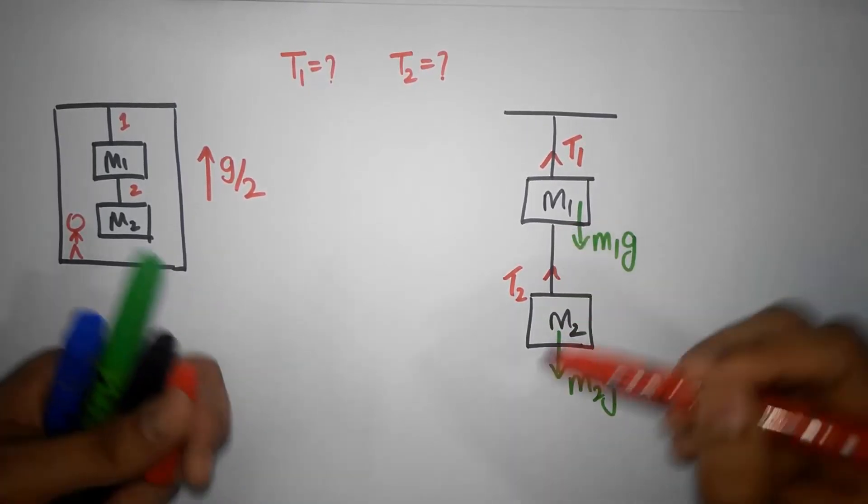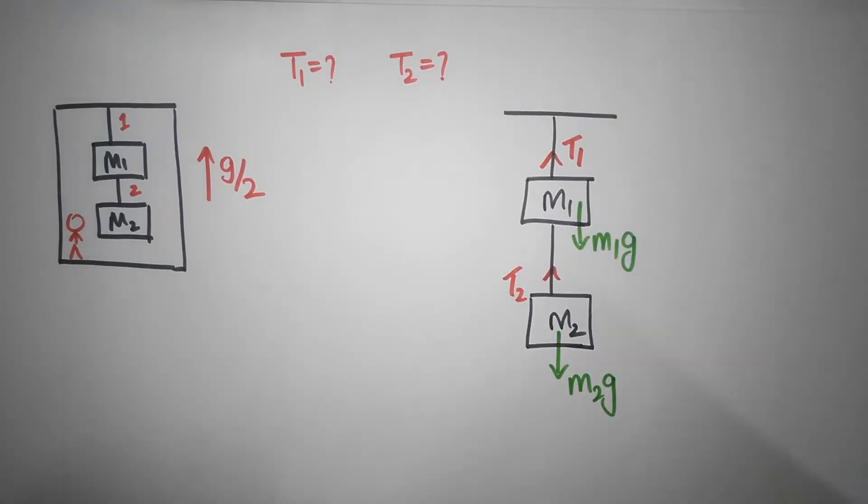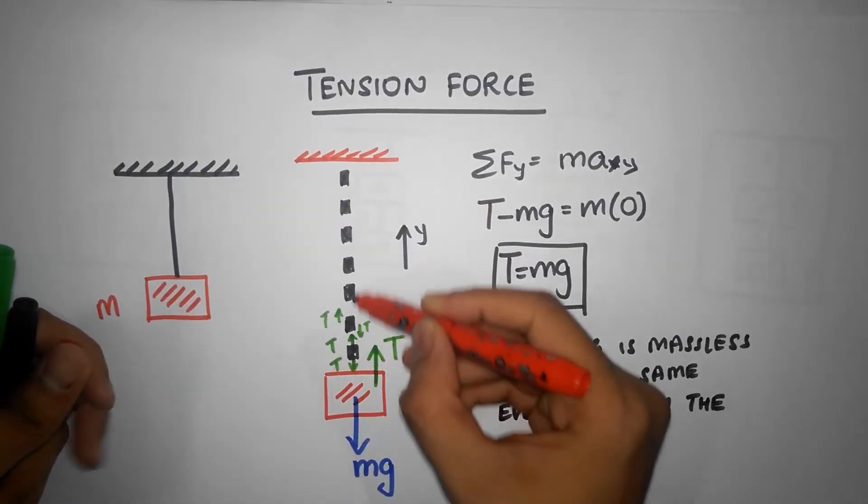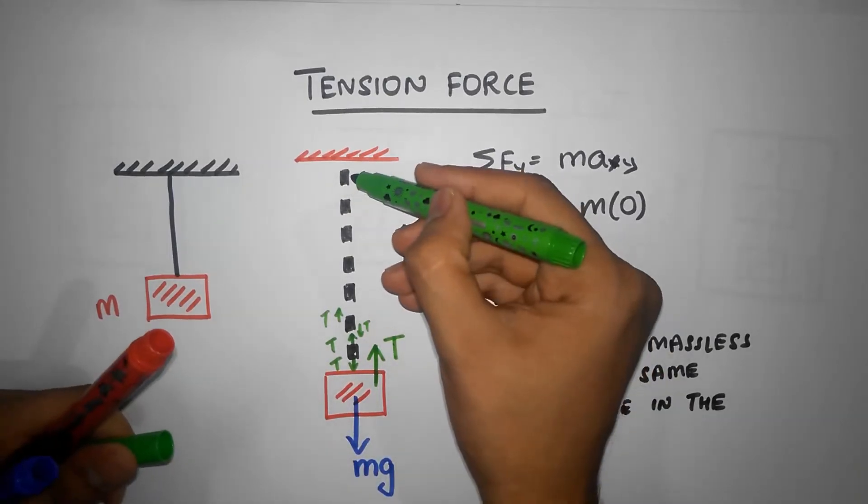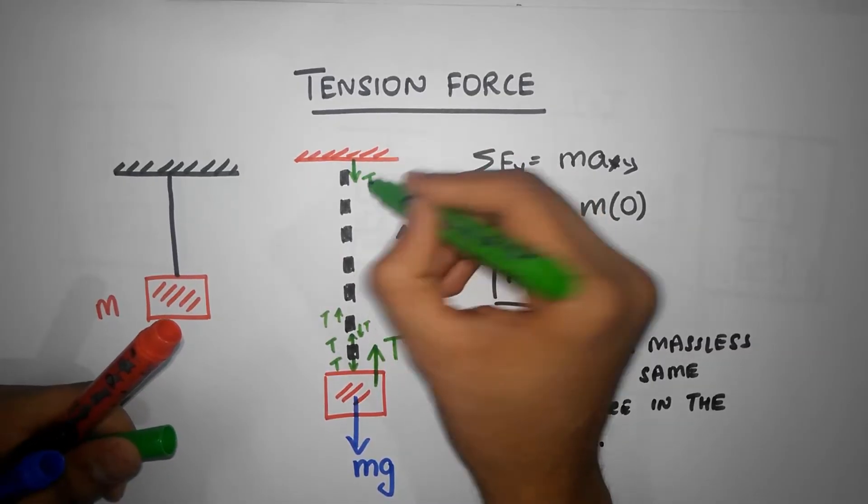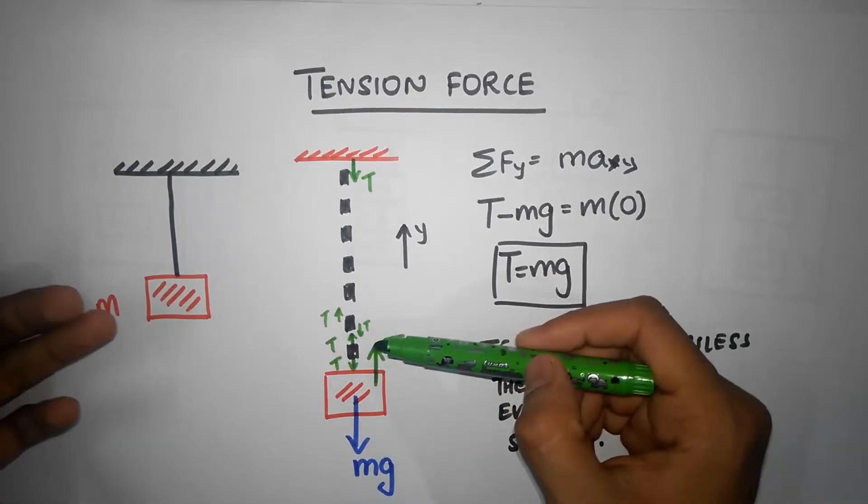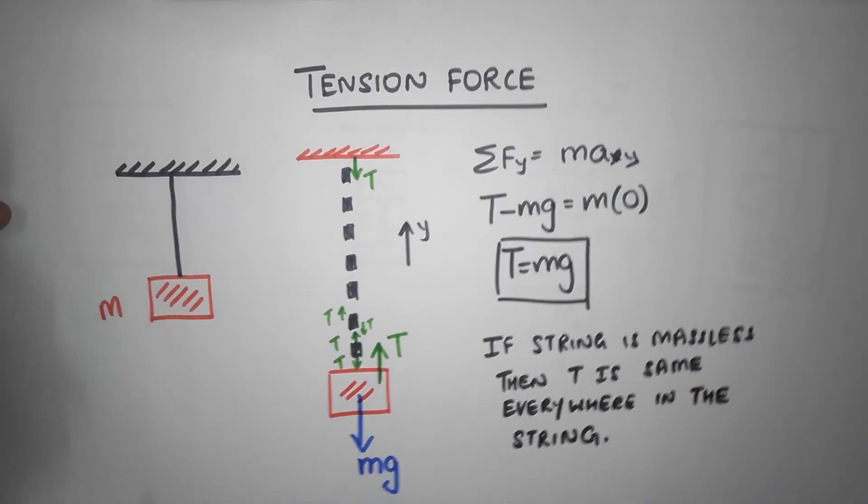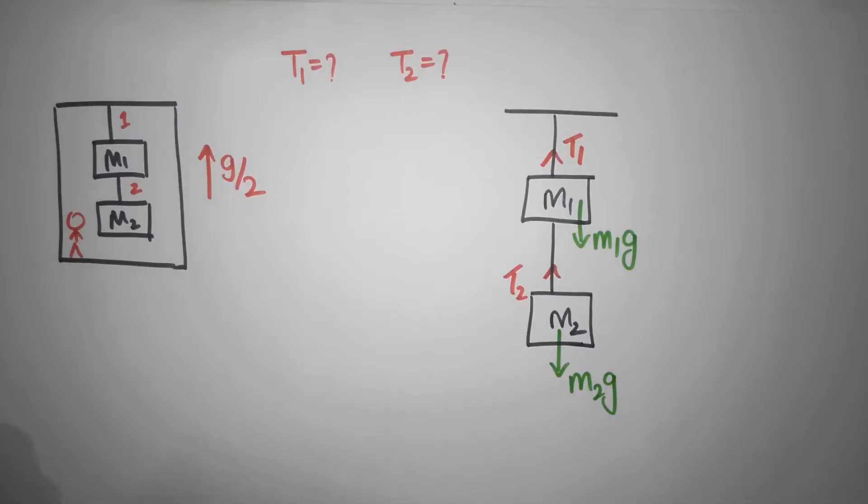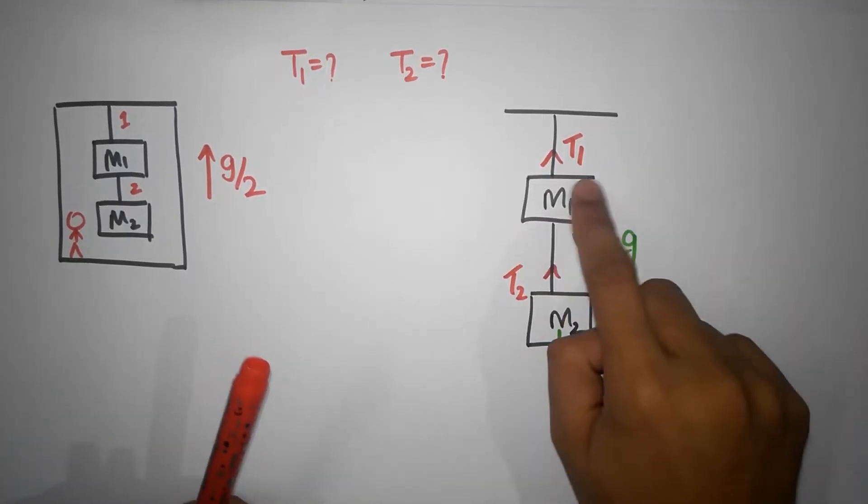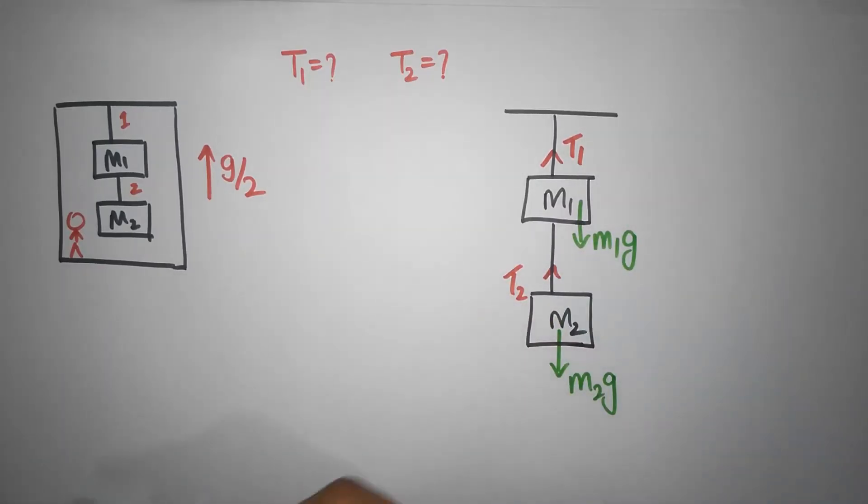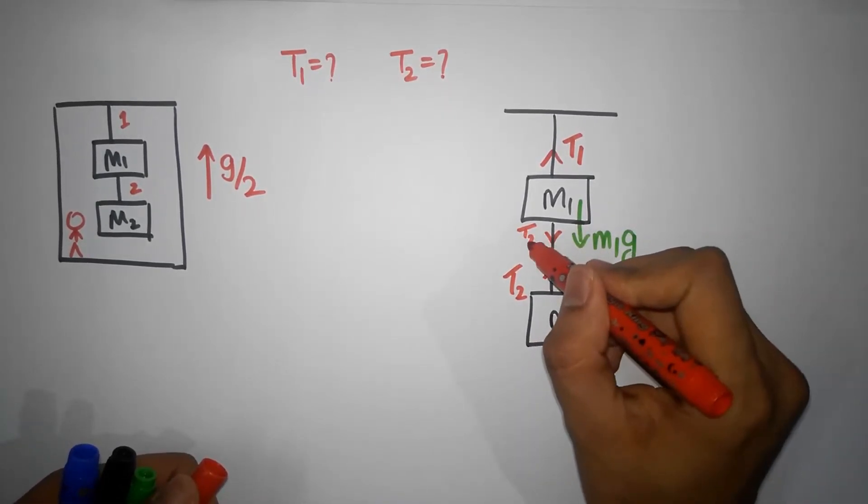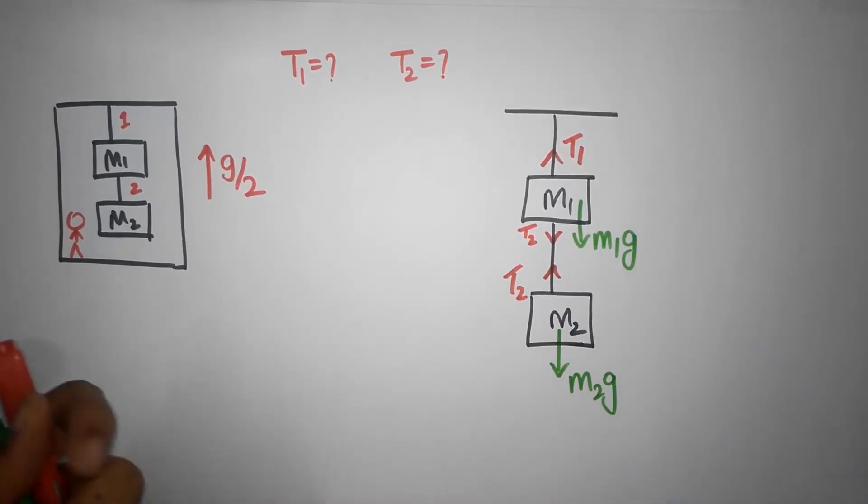But notice the tension force everywhere in the string is exactly the same. Remember what we did last time. And if this was the ceiling, because the tension force is same everywhere, even this particular last part of the string is going to pull on the ceiling down with the tension force T. You can pretty much understand this because if this was too heavy the ceiling would break in extreme cases. So because of that, even over here the string is going to pull down on this particular block. Remember tension force is always a pulling force, so it's going to pull everywhere. There's a pull down and tension must be the same because it's a massless string. So there's a tension T2 acting over here.